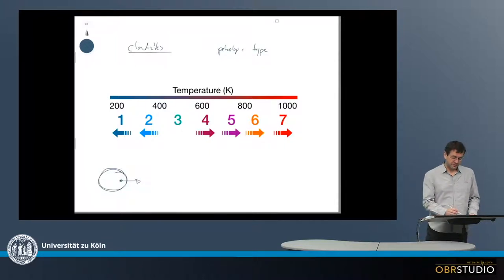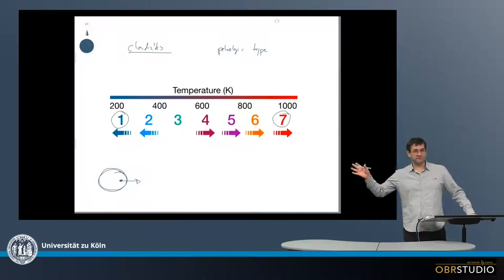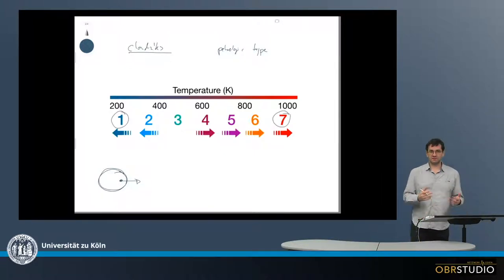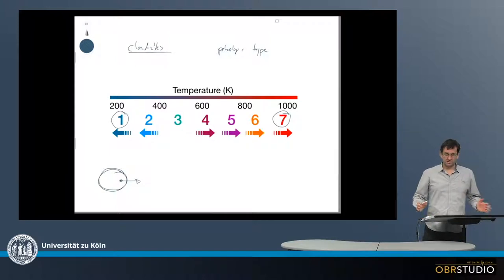Now the petrologic type is a number scale from one to seven indicating a specific temperature, and associated with this temperature a certain secondary alteration process or possible processes.